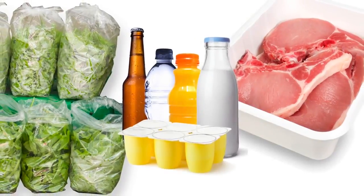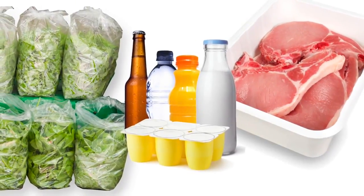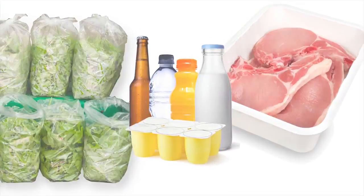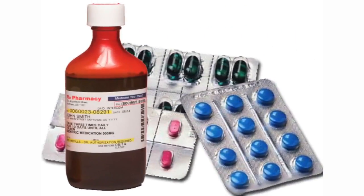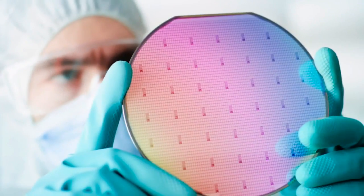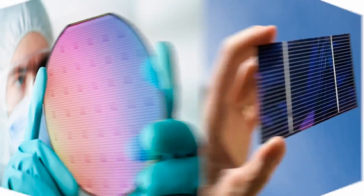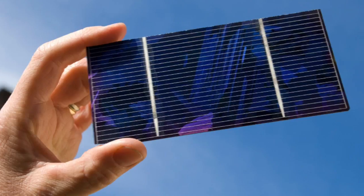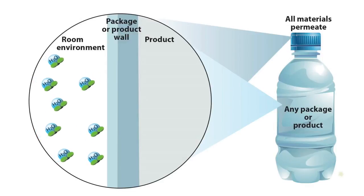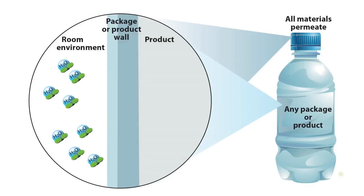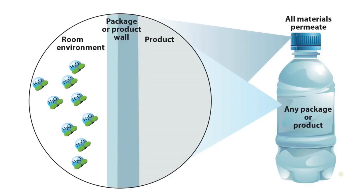Water vapor transmission rate is a property very important to packaging in many industries. Many packaged products are moisture sensitive, so controlling the water vapor into or out of the package is crucial to retaining the quality of the product until opened by the customer. All materials permeate — the question is, to what degree? How much water vapor either into or out of the package over a given length of time will be optimal for the product?